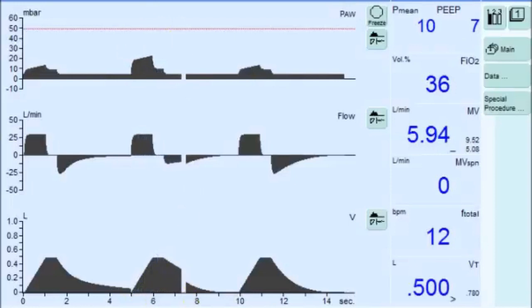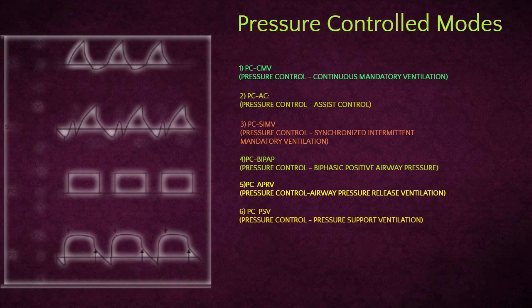Pressure control ventilation has different modes. They are as follows: Continuous mandatory ventilation, assist control, synchronized intermittent mandatory ventilation.